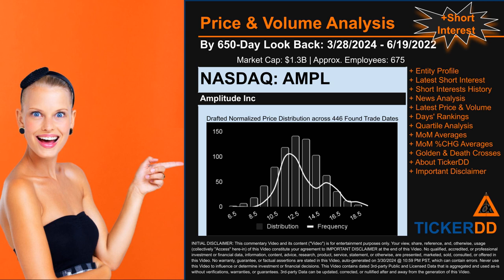Now that we have made our lawyers happy, capitalist brothers and sisters, let's get started. AMPL went public on September 28, 2021, which was roughly two years and six months ago. Looking back 650 calendar days from Thursday March 28, 2024 to Sunday June 19, 2022, we found 446 applicable trade dates for use in our analysis of this ticker, which has a market capitalization of about 1.3 billion dollars. Based on available license data, we think that the company Amplitude Inc behind this ticker has 675 full-time employees. Consider that number to be an estimate and not an exact count.